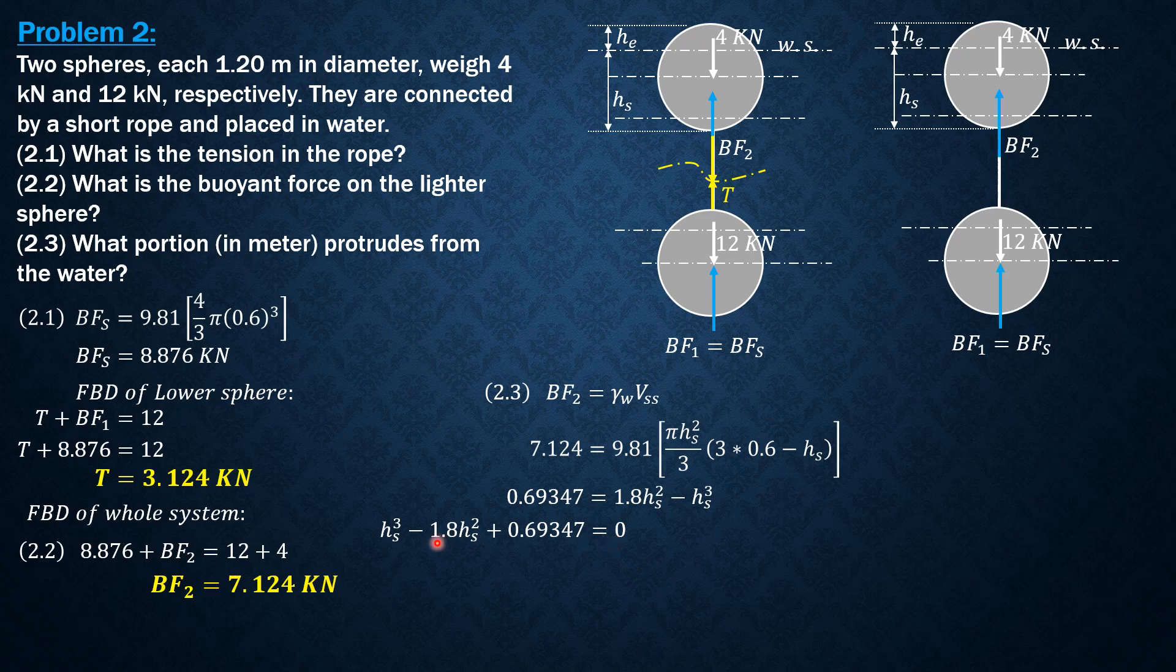This is a cubic equation with expected three roots. Using the calculator, the roots are -0.5439 meter, 1.486 meters which is absurd because the maximum value of hs should be the diameter of the sphere, which is 1.2, and this exceeds 1.2 meters. Therefore, the third root, 0.858 meter, is the only acceptable value of hs because this is less than 1.2.